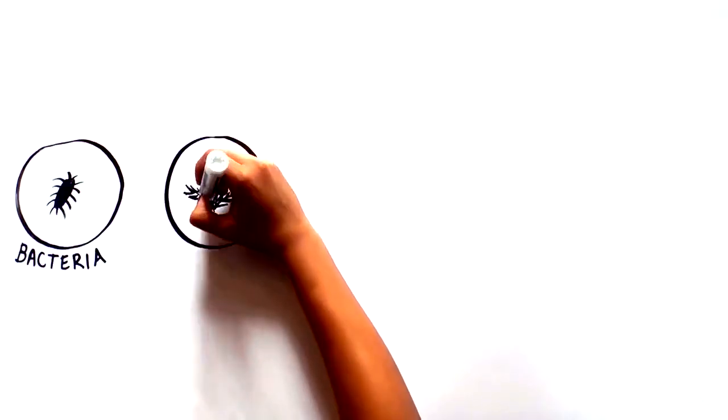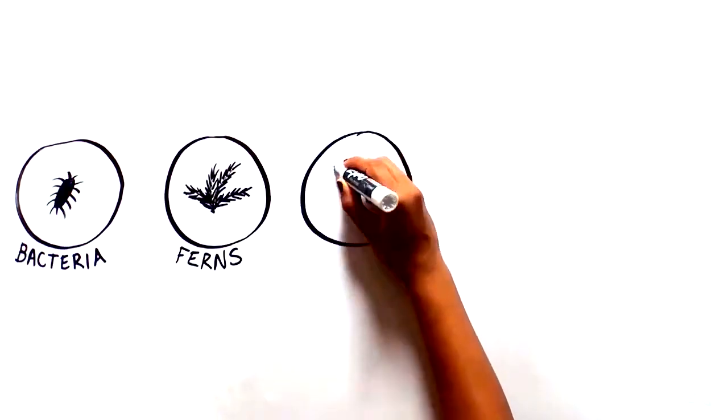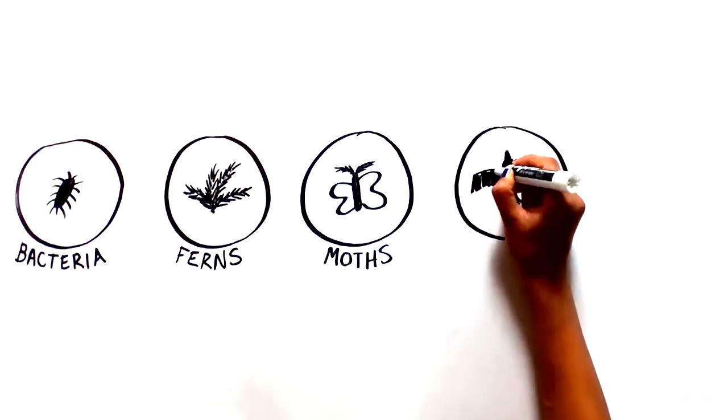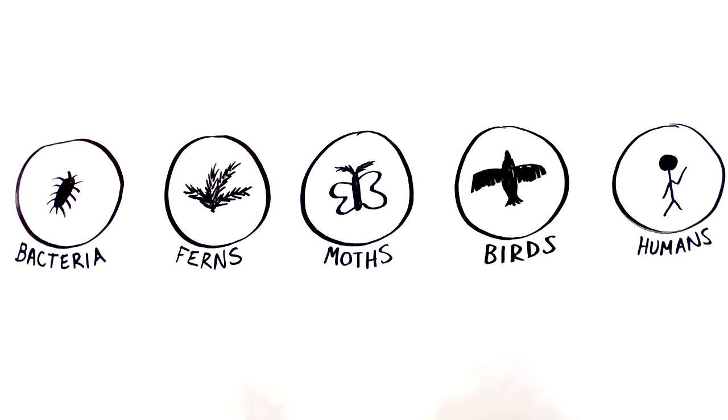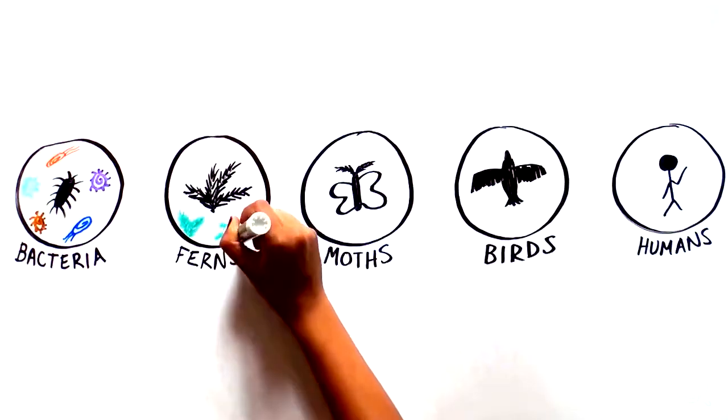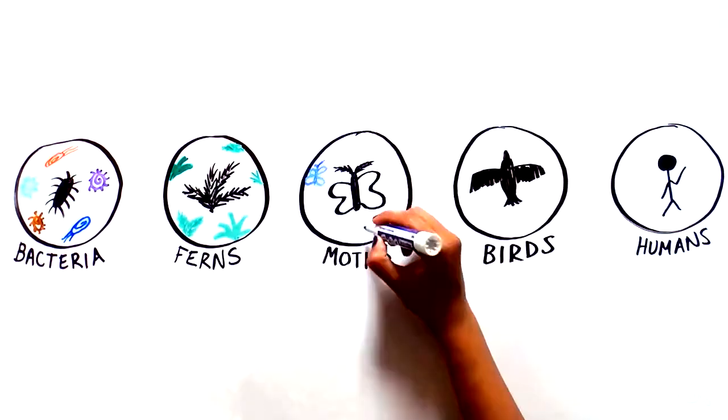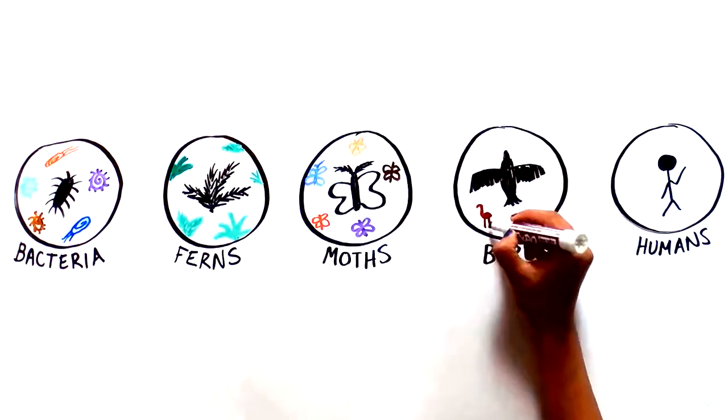Think about the amazing diversity of living things on Earth, ranging from single-celled organisms like bacteria to complex multicellular organisms like ferns, moths, birds, and humans. Even among a given family or single species, there are widely varying features like color and size.